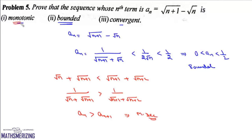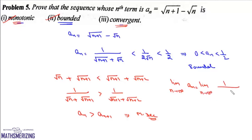Since the sequence is bounded and monotonic, by the monotone convergence theorem it is convergent. The limit as n → ∞ of aₙ equals the limit as n → ∞ of 1/(√(n+1) + √n), which equals 0. So the sequence converges to 0.